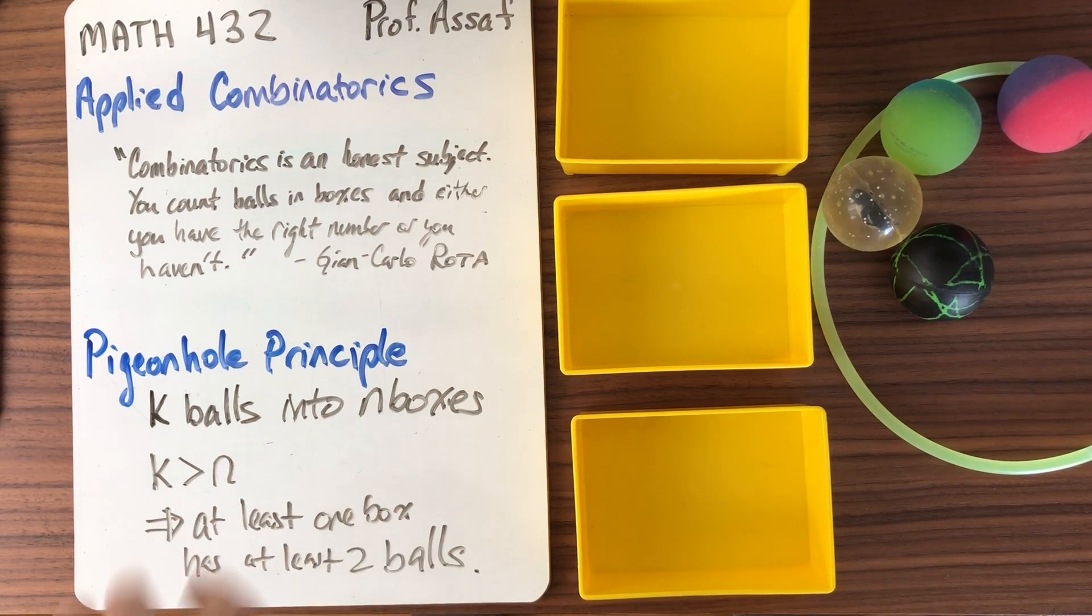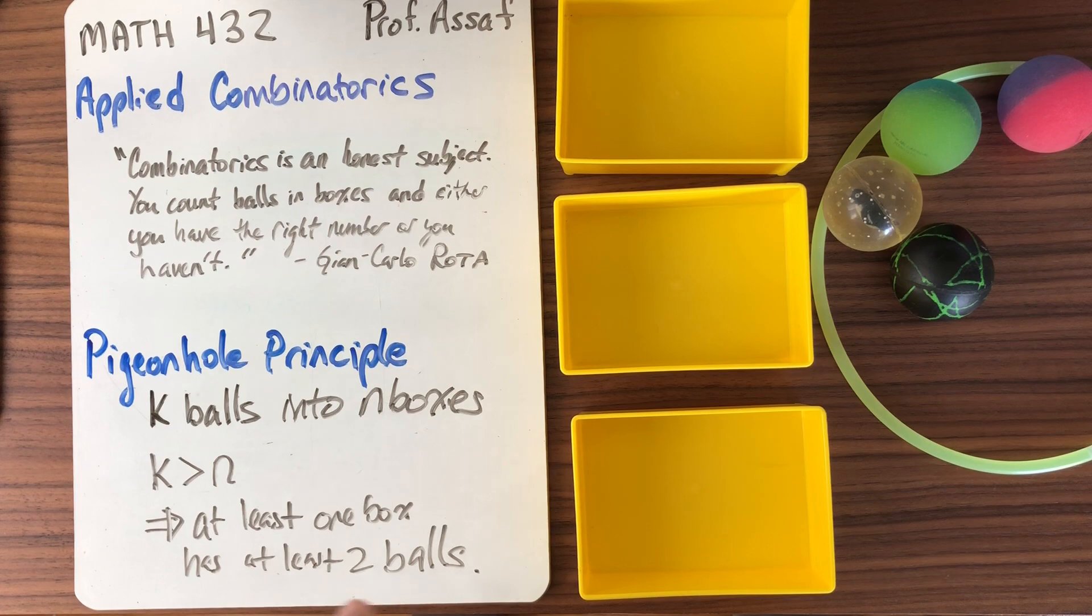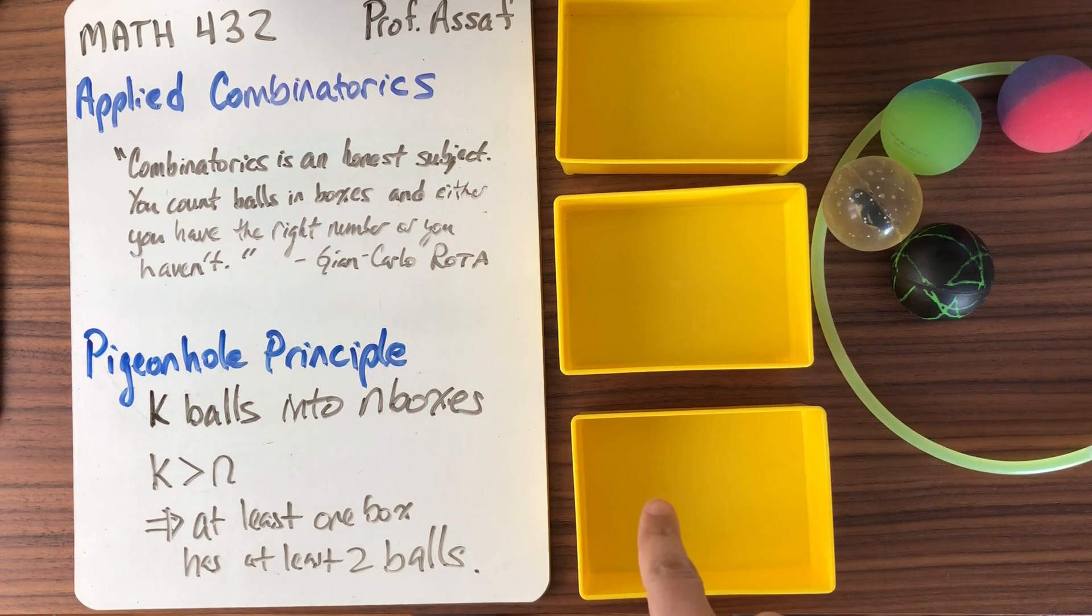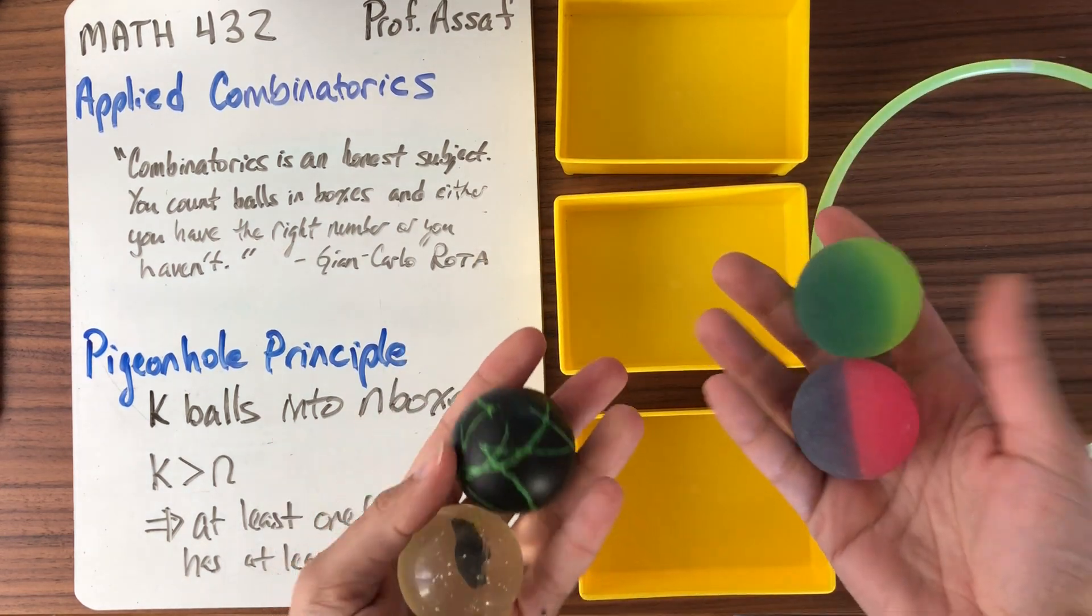We have four balls and we have three boxes. So we can do the Pigeonhole Principle. So the Pigeonhole Principle says no matter how I put these balls into these boxes, at least one of the boxes has at least two balls. And it's sort of obvious when you look at it, right? What am I going to do?